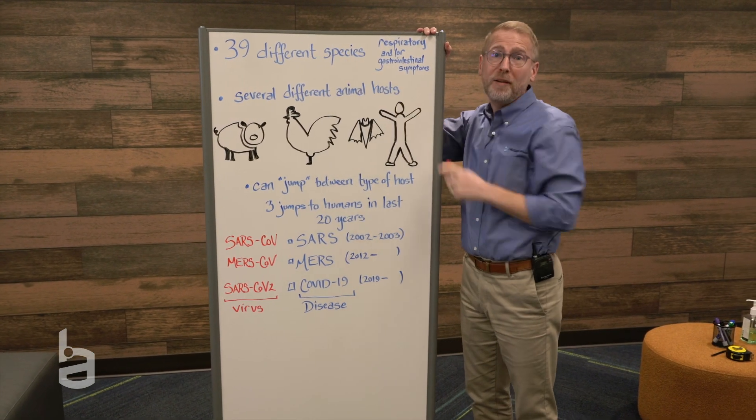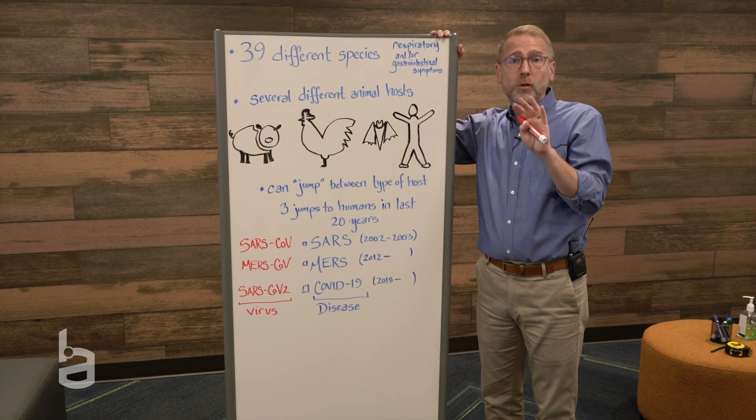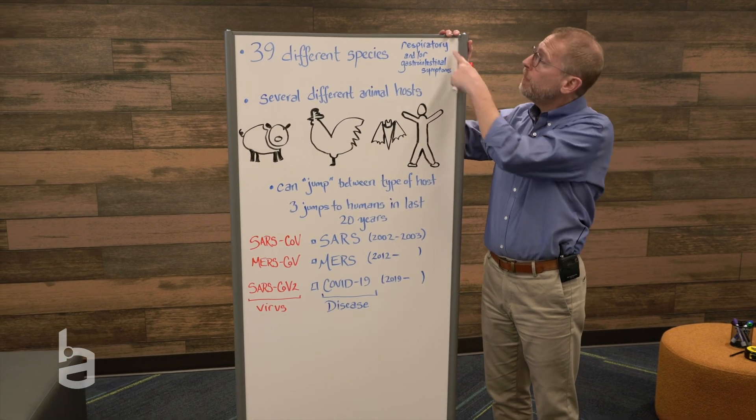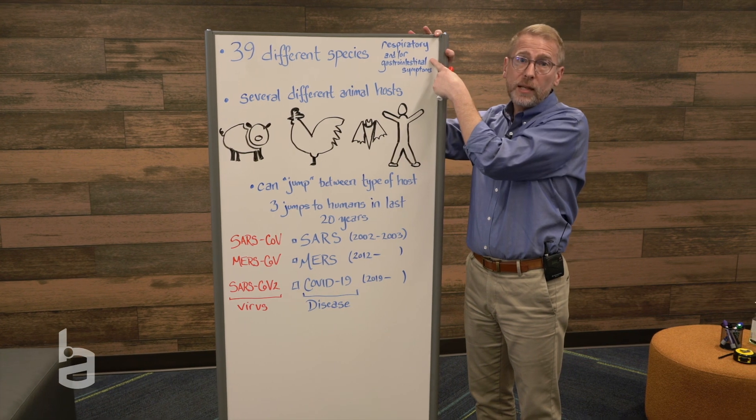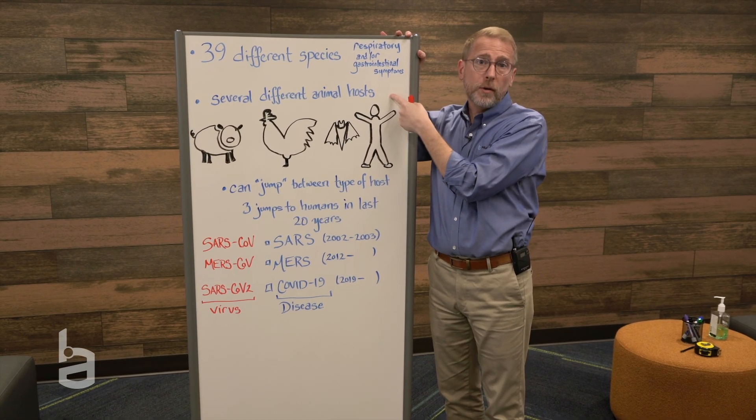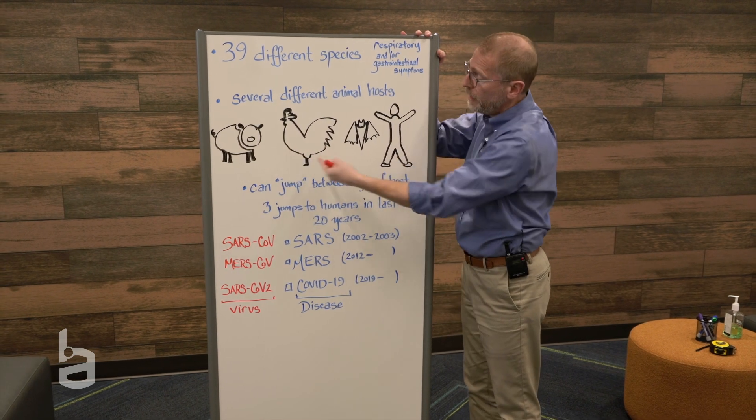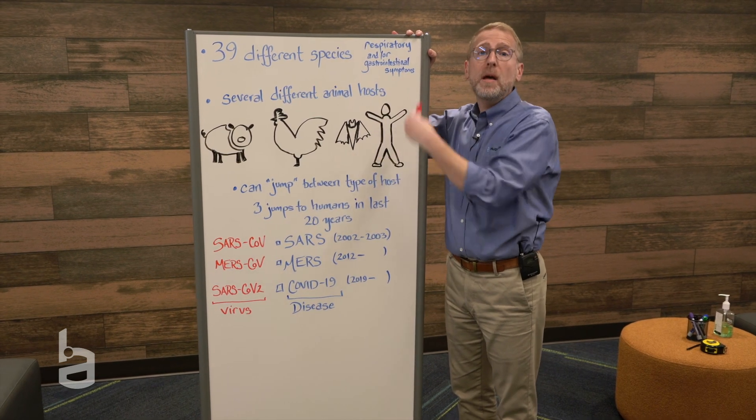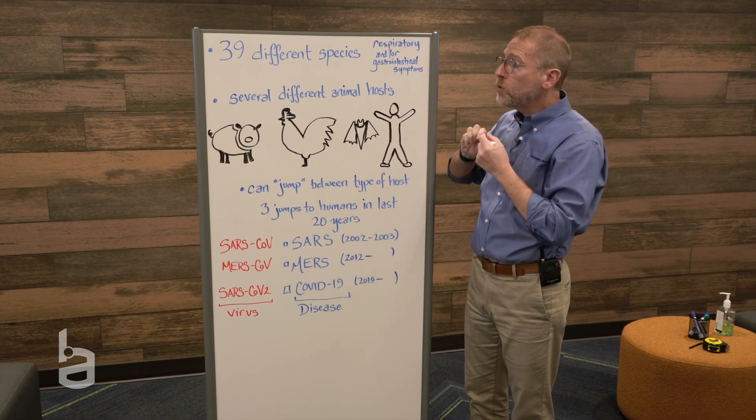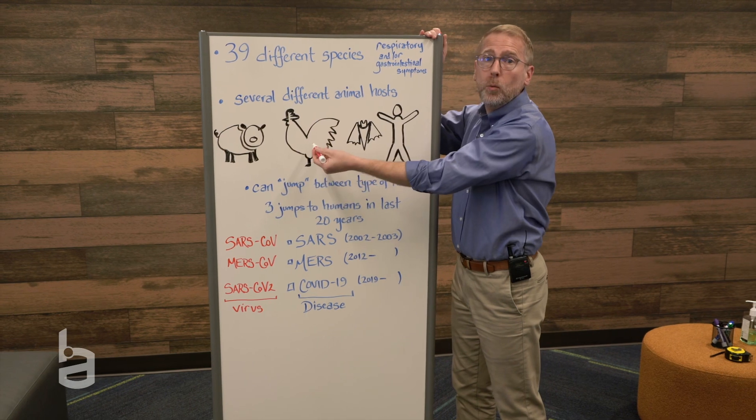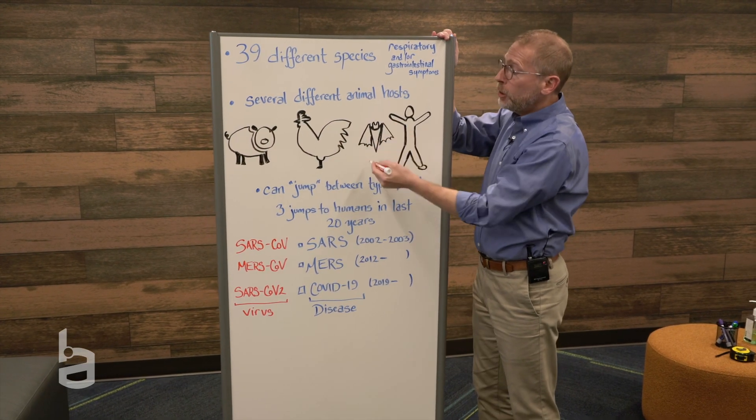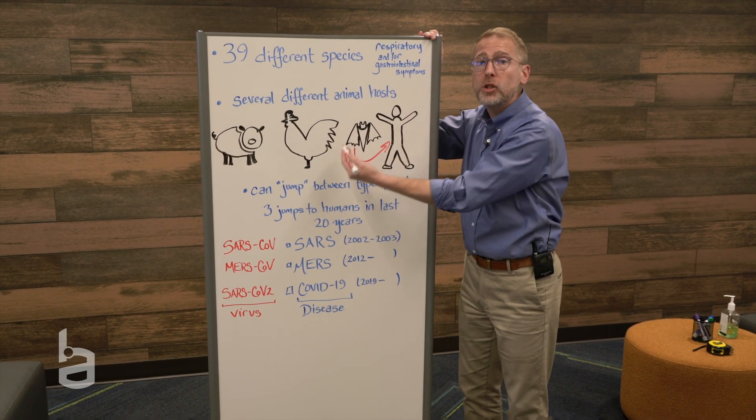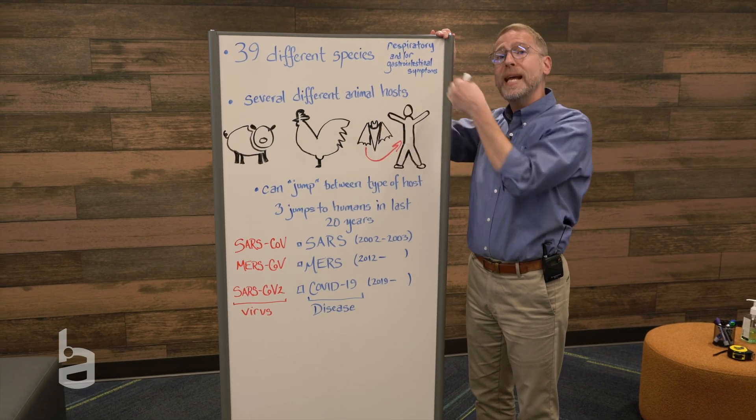There are 39 different species of coronavirus. They vary from each other only slightly on the basis of their RNA genetic code. And primarily, when they infect organisms, they cause either respiratory and or gastrointestinal symptoms. There are several different hosts that these coronaviruses infect. I've just shown you a handful of them: pig, chicken, bat, and human. Generally, different types of coronaviruses have a favorite organism that they primarily infect. So most of the time, the infection stays specifically within one type of organism. But occasionally, you'll actually have a virus that started in one organism that now actually has found a way to infect another organism. So it's jumped from its original host into another host.